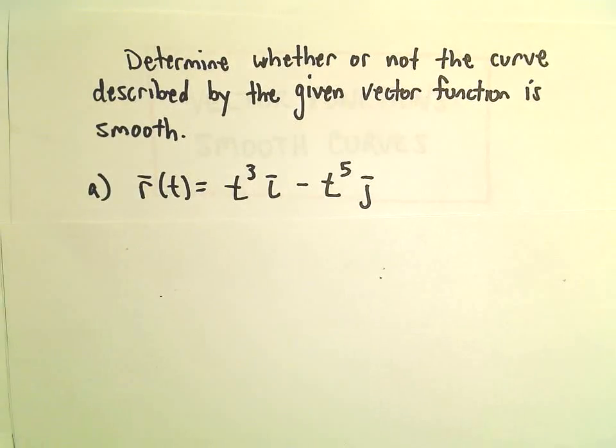So in part A here we have r of t equals t cubed times i minus t to the fifth times j. So the first thing we're going to do here is just take a derivative.